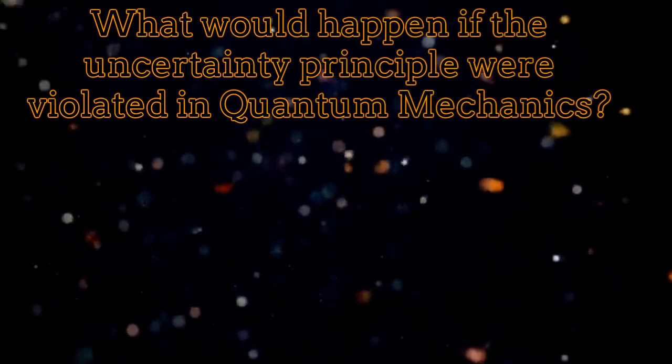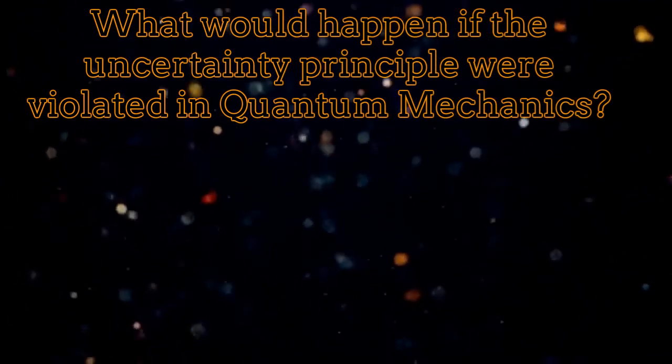We know that quantum mechanics obeys the Heisenberg uncertainty principle. But then, what would happen if, for any reason, this principle is violated?